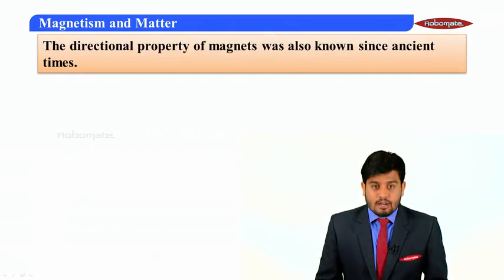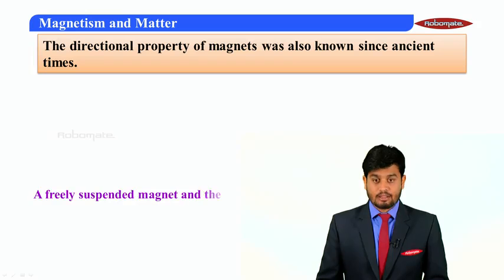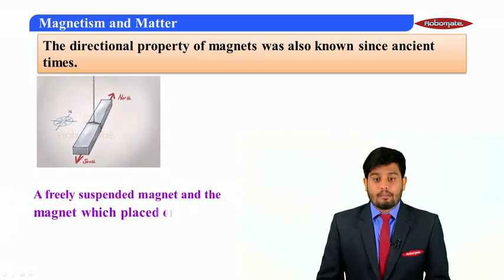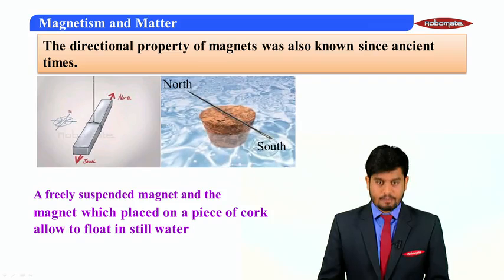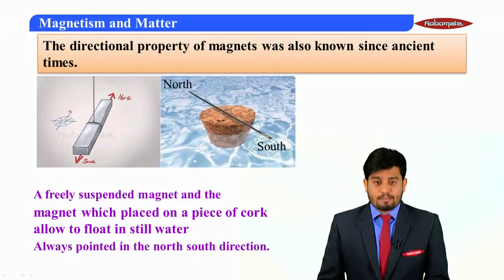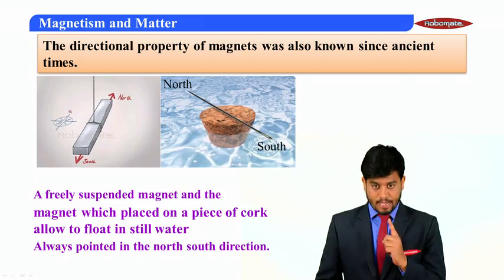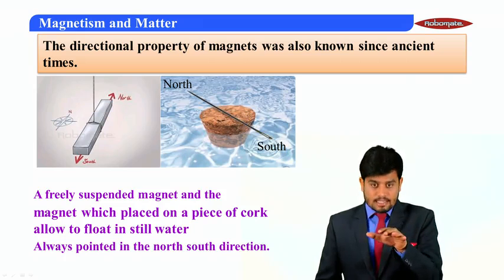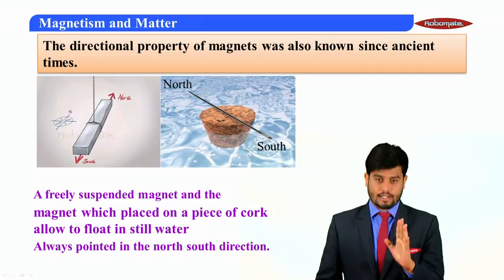The directional property of magnets was also known since ancient times. A freely suspended magnet and the magnet which placed on a piece of cork allowed to float in still water always points in the north-south direction. This is how we can recognize the directional property of the magnet.